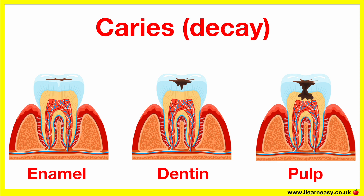Medium caries, also known as dentin caries. This decay extends from the enamel into the dentin, which is the softer layer beneath the enamel. The decay appears as visible brown or black spots or even holes on the tooth, and can be detected on clinical exam or x-rays. Medium caries causes mild to moderate discomfort, as well as sensitivity to cold, sweet, or pressure. The treatment options include removing the decay and restoring the tooth using fillings.